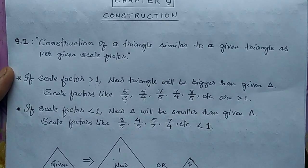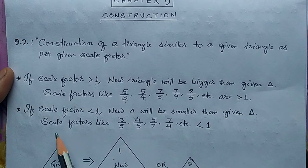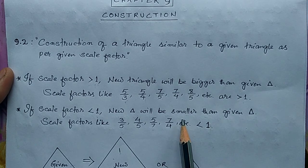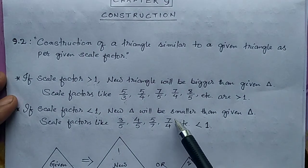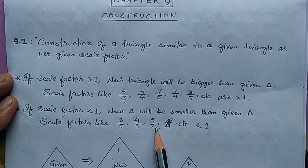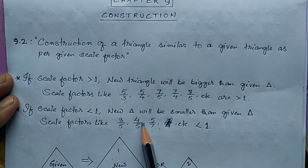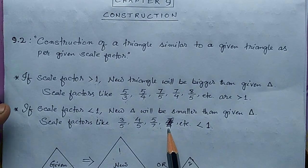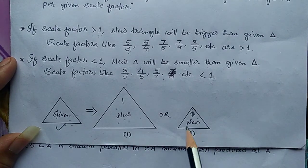In the second case, if the scale factor is less than one, the new triangle will be smaller than the given triangle. Scale factors like 3/5, 4/5, 5/7 are less than one because the numerator is smaller than the denominator. So if the scale factor is less than one, our new triangle will be smaller than the given triangle.